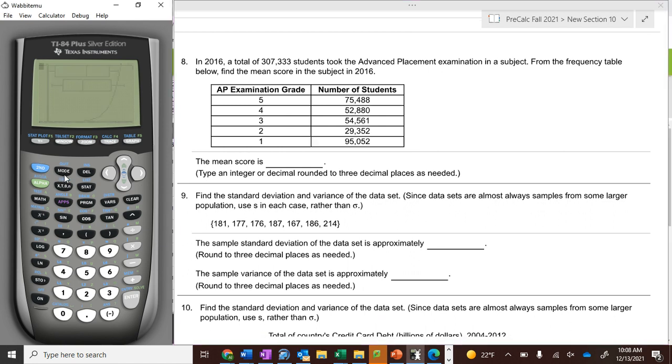The ACT or AP exam one is a little different, so I will help you with that one. What is the mean score of this? So what you do is you take and add all these numbers up. So you add up 75,488 with 52,880 with 54,561, and then add to that 29,352, and add to that 95,052.